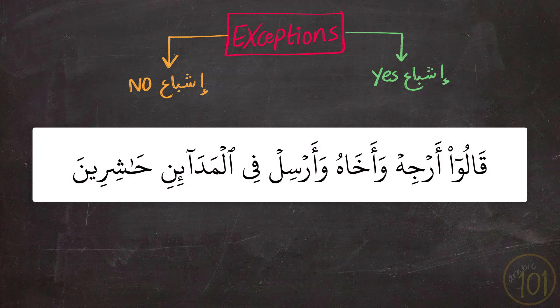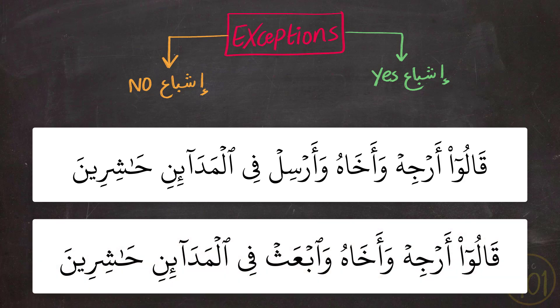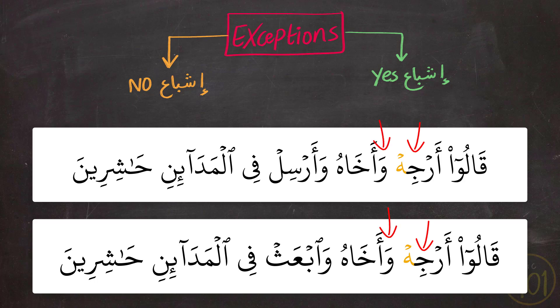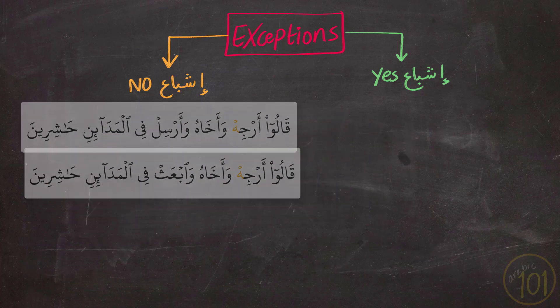قَالُوا أَرْجِهُ وَأَخَاهُ وَأَرْسِلْ فِي الْمَدَائِنِ حَاشِرِينَ and قَالُوا أَرْجِهُ وَأَخَاهُ وَبَعَثْ فِي الْمَدَائِنِ حَاشِرِينَ. These two examples are very similar, so they are discussed together. In these two cases, we have ها that is extra, and it came between two letters — one with كسر and the other with فتحة. We kept on reading, but still we cannot apply إشباع in this position.